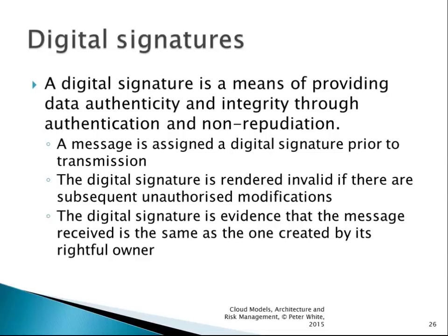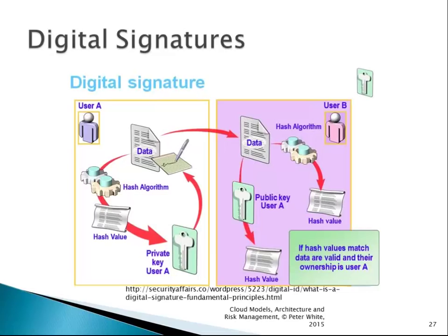User A wants to send something to User B. He has some data, runs it through a hash algorithm and gets a hash value, then uses his private key to encrypt it. That now is encrypted cipher text which he sends to User B. User B takes that data, runs it through a hash algorithm to produce a hash value, and also takes the encrypted cipher text and runs it through the public key of User A to produce another hash value. If the two hash values match, the data is valid and ownership is guaranteed to be User A.